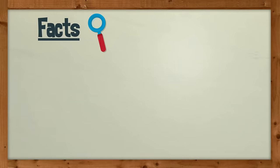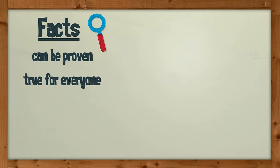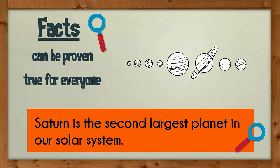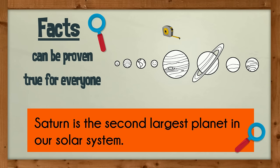Facts are truths that can be proven by measurements and figures, by research and surveys. Facts are true for everyone. Here is a fact: Saturn is the second largest planet in our solar system. It is a fact because it can be proven by research — scientists are able to measure the size of each of the planets.